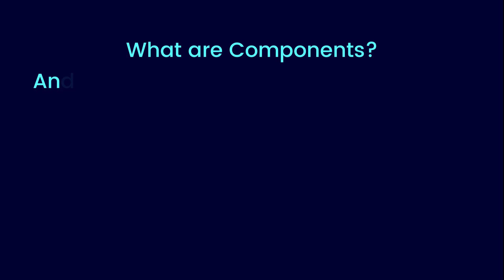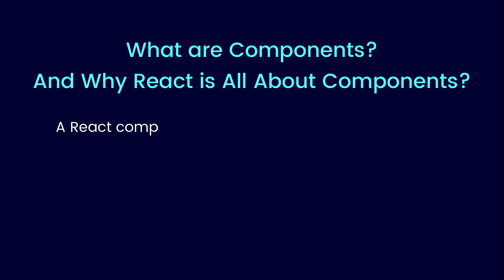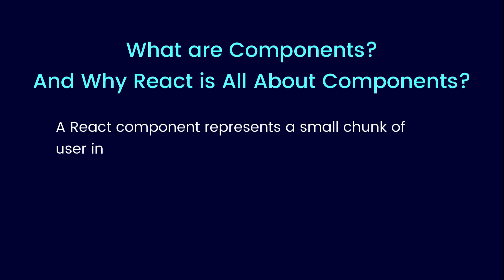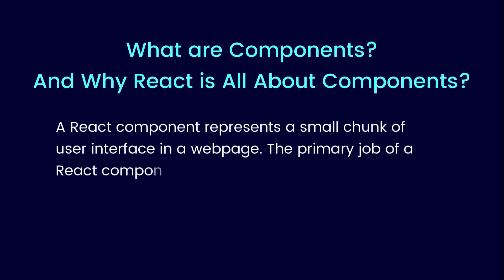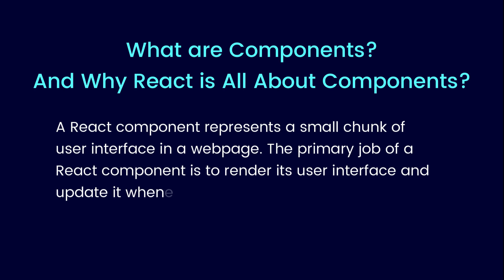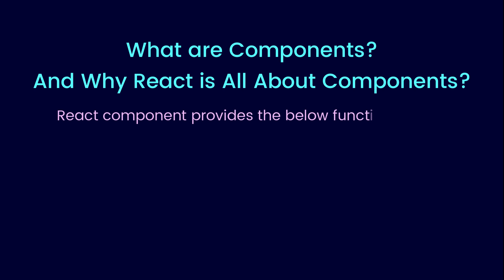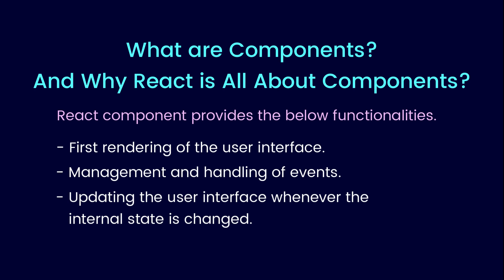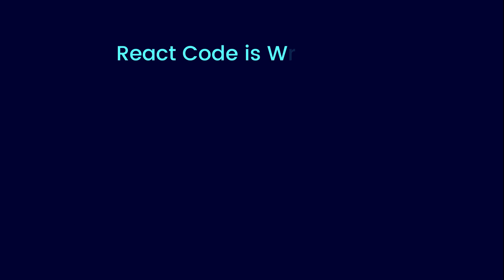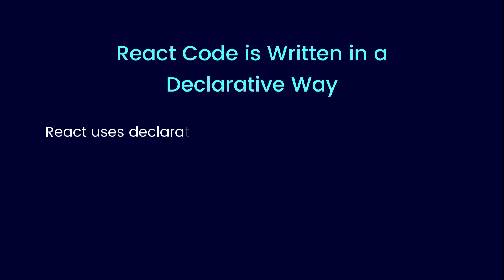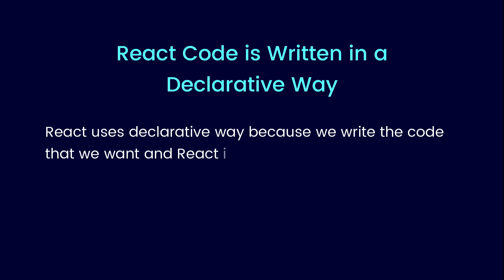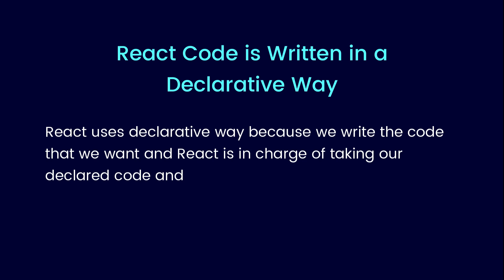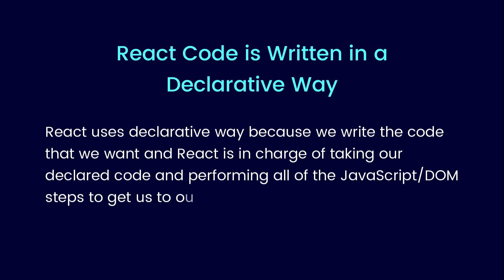What are components and why is React all about components? A React component represents a small chunk of user interface in a web page. The primary job of a React component is to render its user interface and update it whenever its internal state is changed. React components provide the following functionalities: rendering of the user interface, management and handling of events, and updating the user interface whenever the internal state is changed. React code is written in a declarative way, because we write the code that we want and React is in charge of taking our declared code and performing all the JavaScript DOM steps to get us to our desired result.